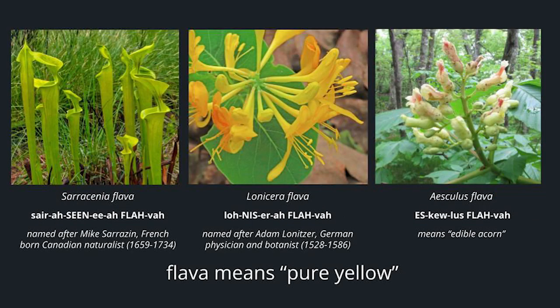Here we have flava, which means pure yellow. Sarracenia is named after Michel Sarrasin, a French-born Canadian naturalist — so the yellow pitcher plant is Sarracenia flava. We have the yellow honeysuckle, which is Lonicera flava, named after Adam Lonitzer, a German physician and botanist. A lot of genera names are named after botanists or scientists. And finally, we have Aesculus flava, which is the yellow buckeye — Aesculus means edible acorn.